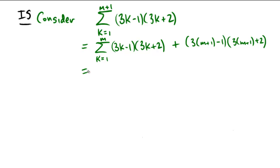Okay, what is this equal to? Well, based on the inductive hypothesis, we assumed that this quantity was equal to 3m cubed plus 6m squared plus m. And then what do we have over here? It looks like we have 3m plus 3 minus 1, so that would be 3m plus 2. And then we have 3m and 3 and 2, so that would be 3m plus 5.